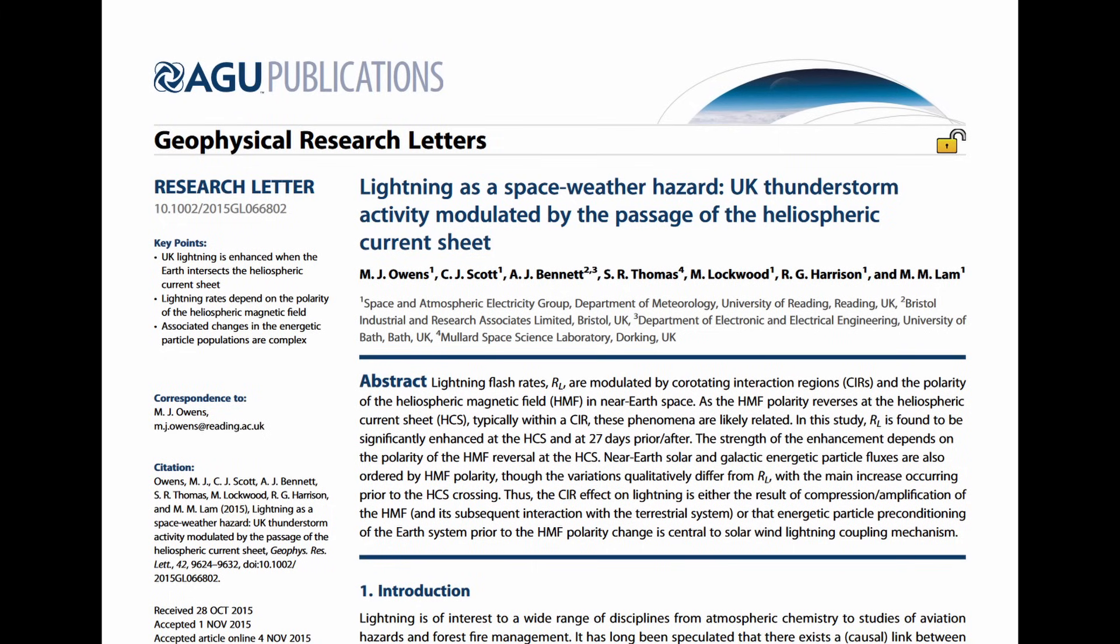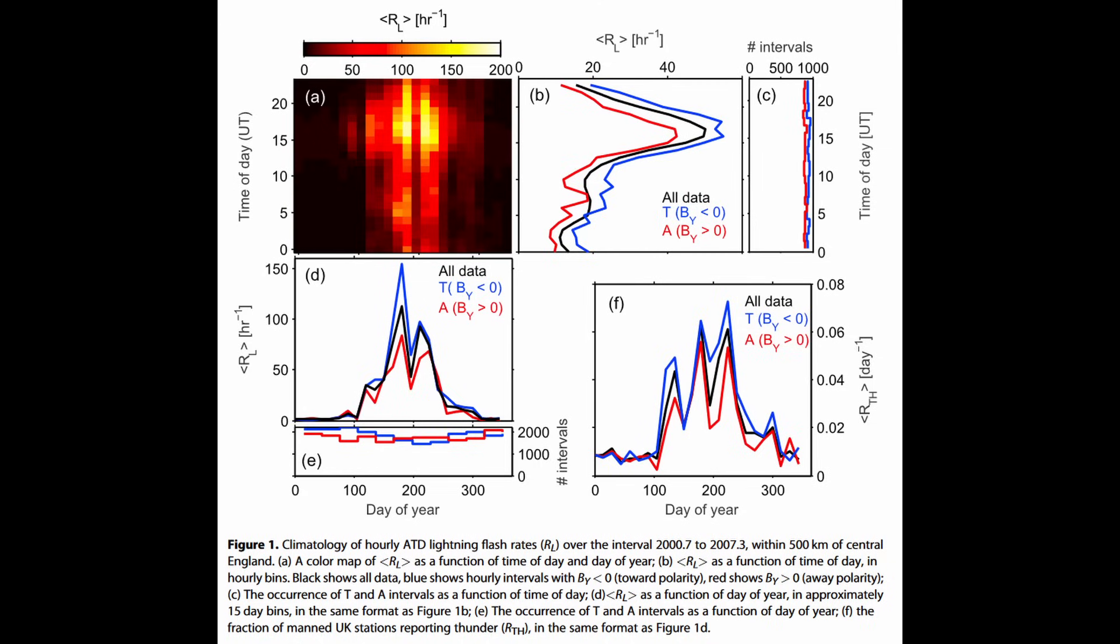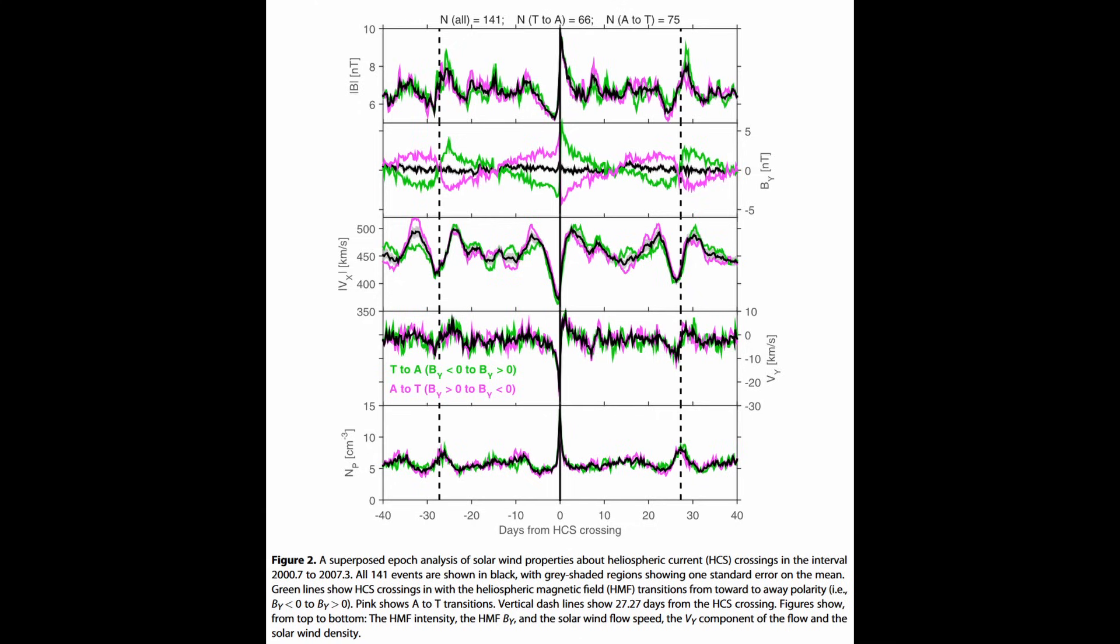Over a span of seven years, scientists diligently monitored the fluctuations in hourly lightning rates as the heliospheric current sheet traversed through. Throughout this period, the current sheet intersected Earth on 141 occasions.